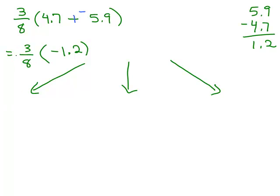One way is change 3/8 to a decimal. Now, I'm not going to show the work here but if you change 3/8 to a decimal, remember you're doing 3 divided by 8, you get 0.375 and you multiply that by negative 1.2. So that's one possibility, change 3/8 to a decimal.